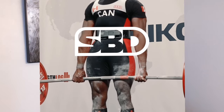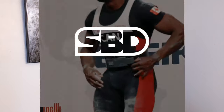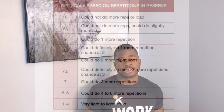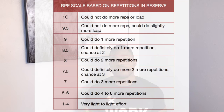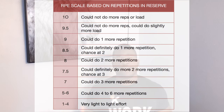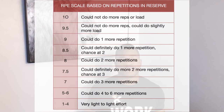In terms of powerlifting and strength athletes, I generally like to use it in terms of reps in reserve. For example, if you're at an RPE of 7, that means you have three more reps in the tank. RPE of 8 means two more reps in the tank. RPE of 10, you're at your max, and it just goes down and up using that method.